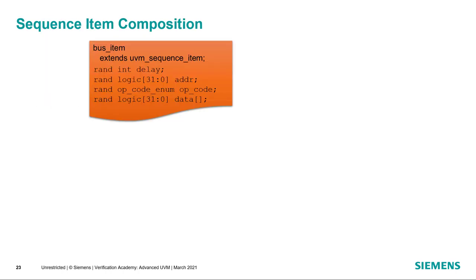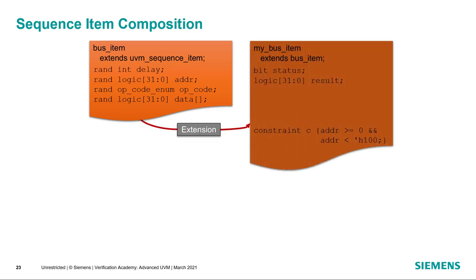When putting together a system, it's very often the case that we may start with a very basic sequence item type and need to make more complex sequence items out of that. There are two mechanisms for doing that. The first is to use inheritance to extend the bus item type and add more information to it. So we start with a bus item extended from UVM sequence item, with fields like delay, address, opcode, and data. We can extend that to a new class called my_bus_item, which adds new fields — status, result, and a constraint. Since this is standard object-oriented programming, my_bus_item also includes all the fields and methods of the base class. For the new class, we create all of the methods, particularly copy and compare, and make sure each calls super.doCopy or equivalent so the operation is applied to the base class as well.